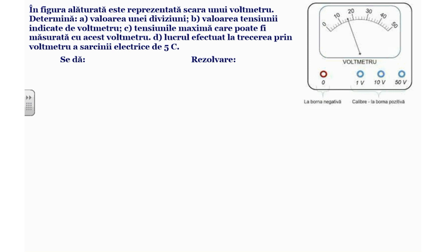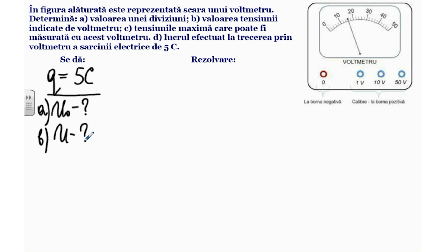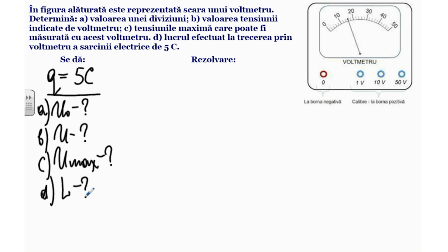Vă propun să rezolvăm probleme cu aplicarea conceptelor definite anterior. Prima problemă: în figura alăturată este reprezentată scara unui voltmetru. Trebuie să determinăm: valoarea unui diviziu, valoarea tensiunii indicate de voltmetru, tensiunea maximă care poate fi măsurată cu acest voltmetru, și lucrul efectuat la trecerea unei sarcini de 5 coulombi. Datele problemei: sarcina transportată Q egal cu 5 coulombi.